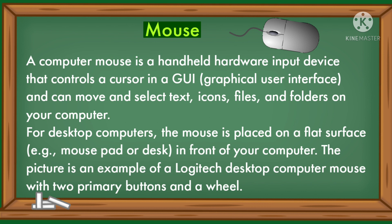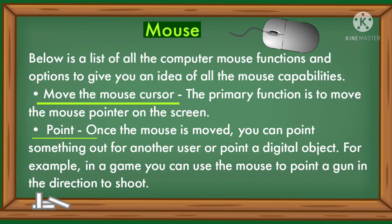A computer mouse is a handheld hardware input device that controls a cursor in a GUI and can move and select text, icons, files, and folders on your computer. For desktop computers, the mouse is placed on a flat surface in front of your computer. Below is a list of all computer mouse functions and options to give you an idea of all the mouse capabilities.